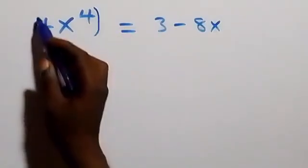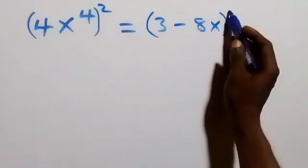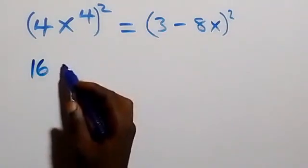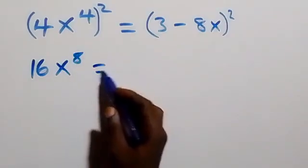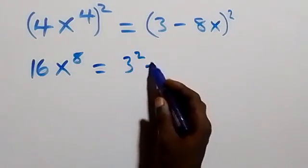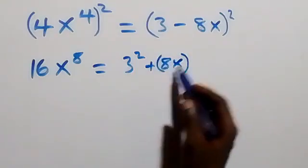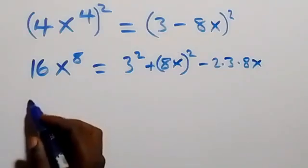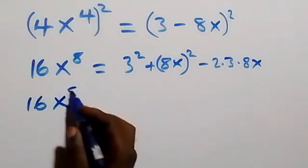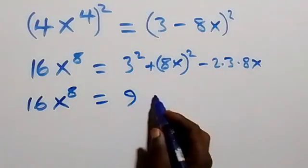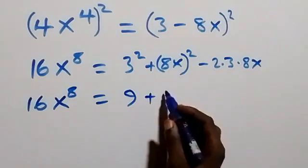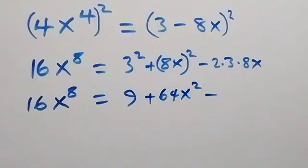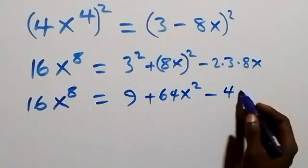Working further, we can square both sides of this equation again. We square this side and also square this side. From what we have here, 4 squared is 16, and x⁴ squared is x⁸. The expansion of (3 minus 8x)² gives 9 plus 64x squared minus 48x.